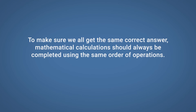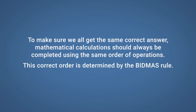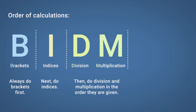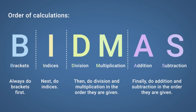To make sure we all get the same correct answer, mathematical calculations should always be completed using the same order of operations. This correct order is determined by the BIDMAS rule. The order of calculations is: calculations inside brackets should always be calculated first. Next, calculate any indices. Then, do any division and multiplication in the order they are given in the sum. Finally, calculate any addition or subtraction in the order they are given.